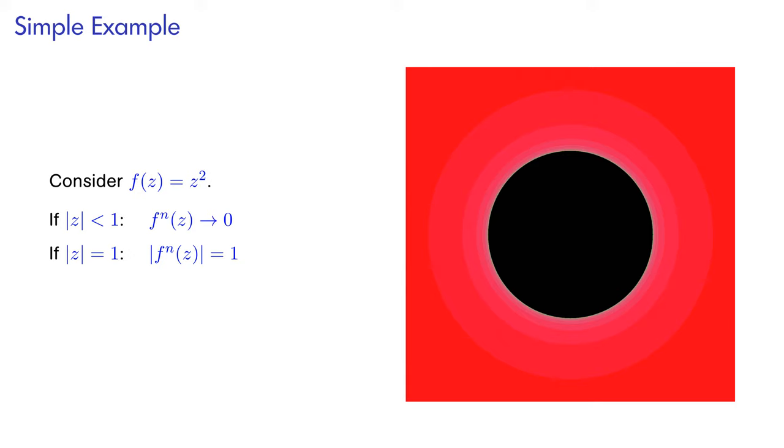If the magnitude of z is 1, then every power of z will have magnitude 1. So here, we don't necessarily have convergence, but at least the sequence remains bounded. That means we can paint these points black.